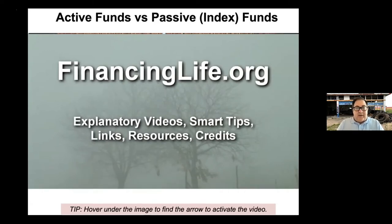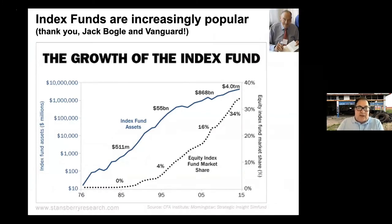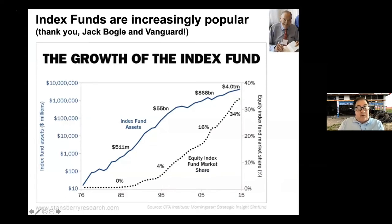That video explained the difference between active and passive investing as neatly and succinctly as possible. Index funds are increasingly popular — this chart shows their growth from the mid-1970s through 2015, with assets going from almost nothing to $4 trillion, representing about 34% of the mutual fund market on this chart.